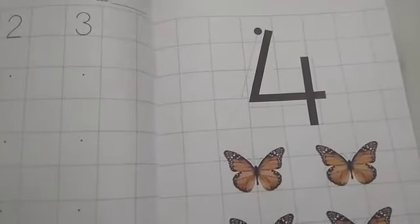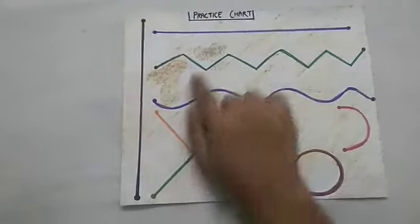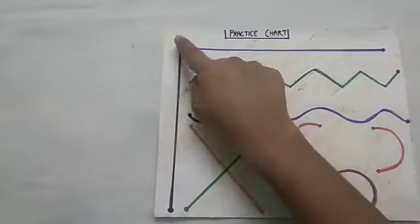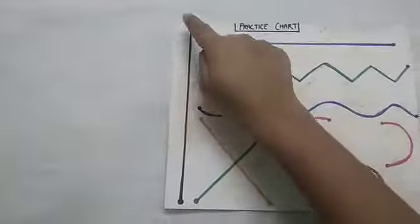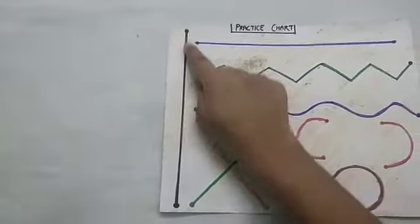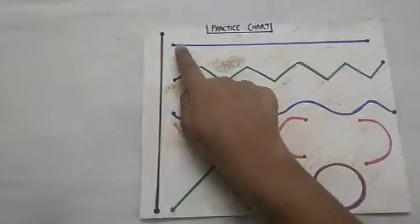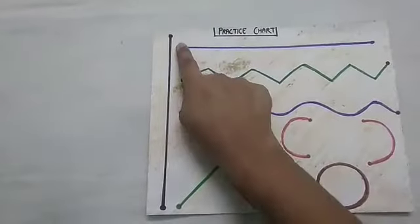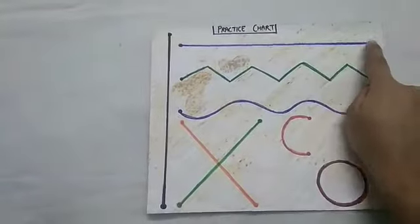But before, let's do practice of lines. This is our practice chart. Let's start. This is a standing line — up to down standing line. This is sleeping line — left to right sleeping line.